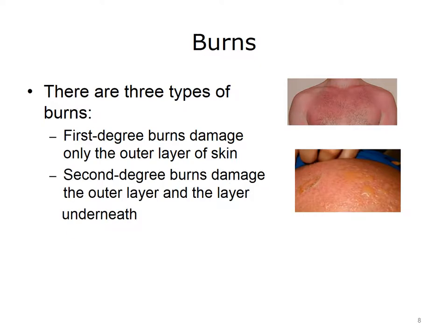Second degree burns damage the outer layer and the layer underneath it. These burns are also referred to as partial thickness burns. Second degree burns are sometimes further described as superficial, involving the more superficial part of the dermis, or deep, involving the superficial and deep parts of the dermis. Second degree burns are pink or red, swollen, and painful, and they develop blisters that may ooze a clear fluid. The burned area may blanch or whiten when touched.